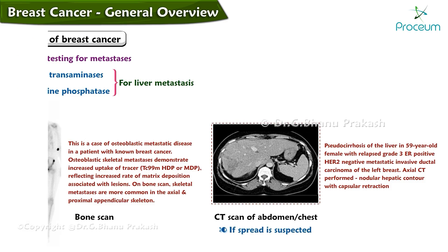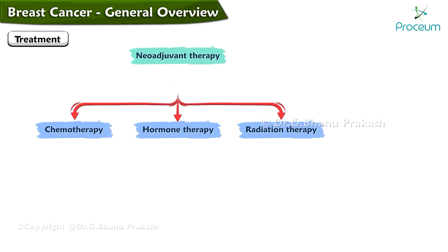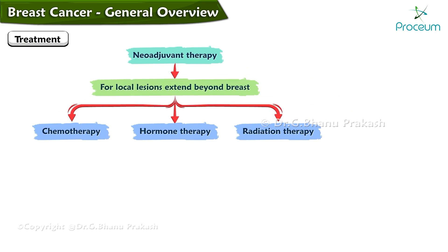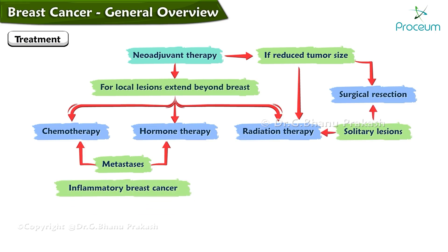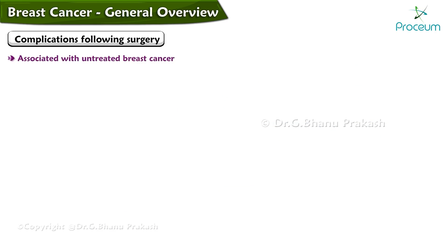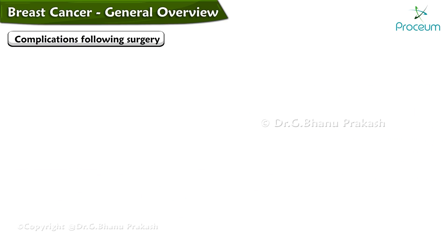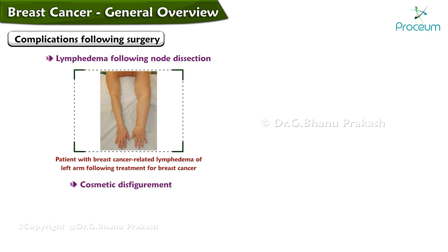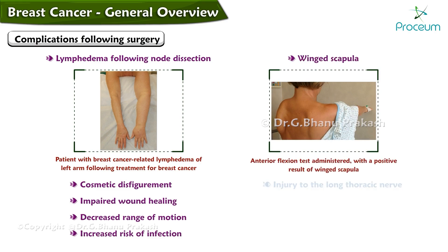Neoadjuvant therapy such as chemotherapy, hormone therapy, and radiation therapy should be used for local lesions that extend beyond the breast. If neoadjuvant therapy has reduced tumor size, surgical resection and radiation therapy can be performed. Metastases can be treated with systemic therapy, but surgical resection and radiation can be used for solitary lesions. For inflammatory breast cancer, mastectomy, radiation therapy, and chemotherapy should all be utilized. Complications of surgical treatment include lymphedema, cosmetic disfigurement, impaired wound healing, decreased range of motion, and winged scapula following injury to the long thoracic nerve.